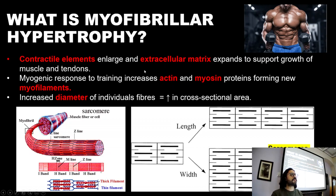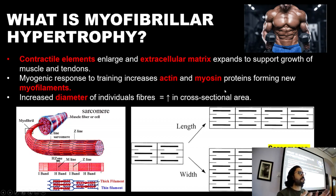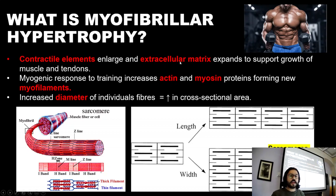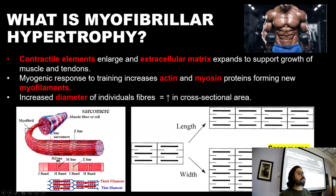We also have an increase in connective tissue — an increase in extracellular matrix. So the outer parts of the muscle, the perimysium, the endomysium, the epimysium, etc., they also increase in size. And likewise, our tendons increase.